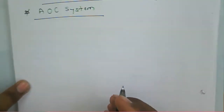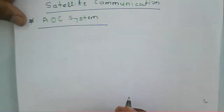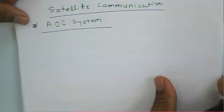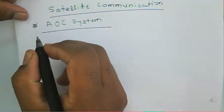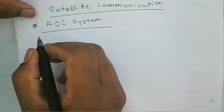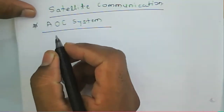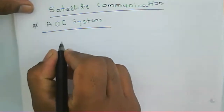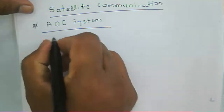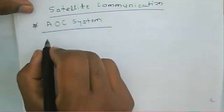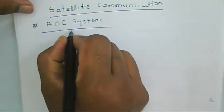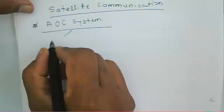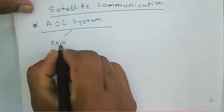Welcome to the satellite communication course. Today we learn about the AOCS system — that is, the Attitude and Orbital Control System. In the AOCS subsystem, we need to know about the satellite's orbital position.